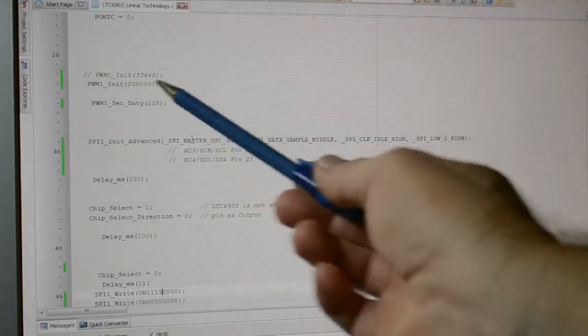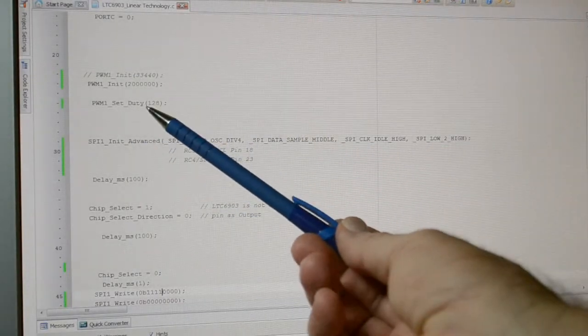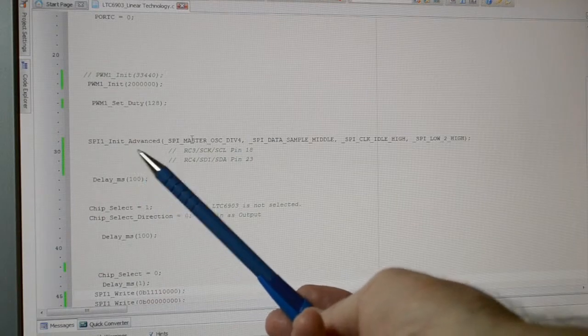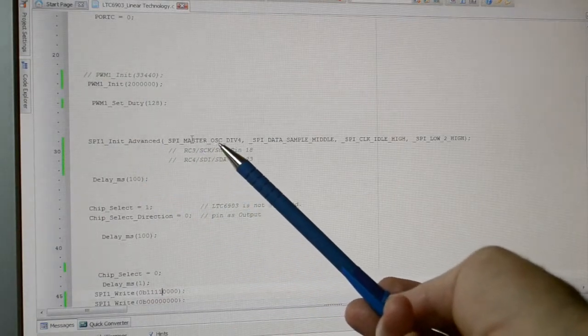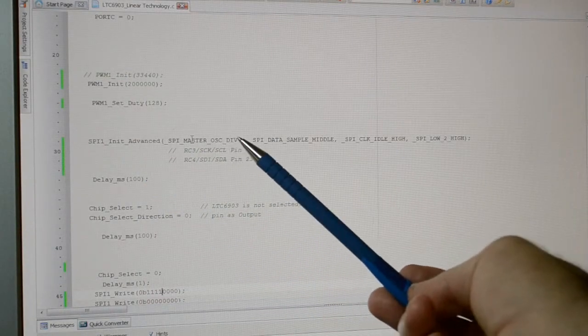So that's the PWM taken care of, the 128 is the duty cycle. This is the SPI initialized advanced, so SPI master, oscillator divided by 4.